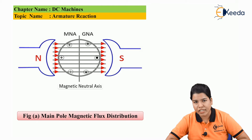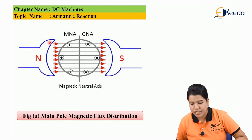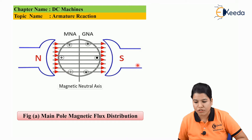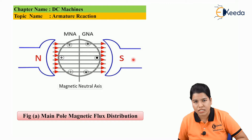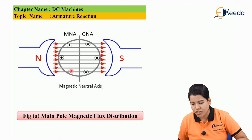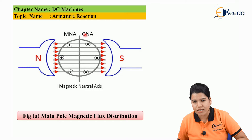Consider figure A. Figure A shows the main pole flux distribution. Here, this is the north pole and this is the south pole. The conductors with the cross sign come under the north pole, whereas the conductors with the dot sign come under the south pole. Here, the current is not flowing, but the flux is shown in the direction it travels from north pole to south pole. Now, there are two axes — MNA and GNA — and we can see that MNA has coincided with GNA.